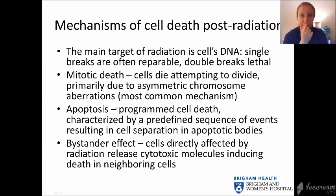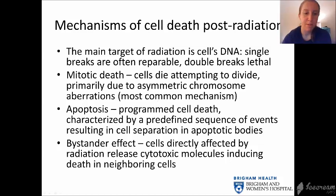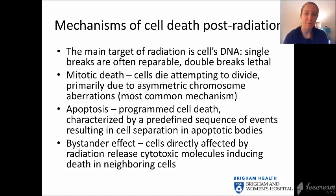There are different mechanisms for cell death. Mitotic death, where cells die attempting to divide — primarily due to asymmetric chromosome aberrations — is the most common mechanism. Apoptosis is programmed cell death with cell separation into apoptotic bodies. The bystander effect is interesting: once a cell is affected by radiation, it releases cytotoxic molecules to warn neighboring cells, which then decide whether to commit apoptosis or continue living.